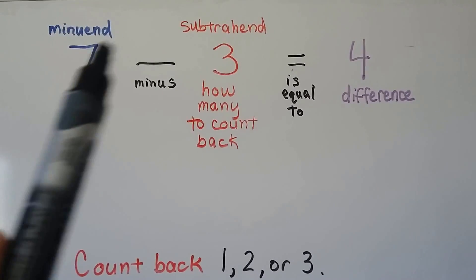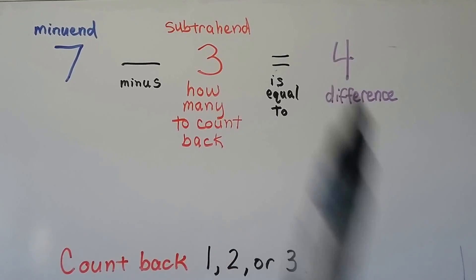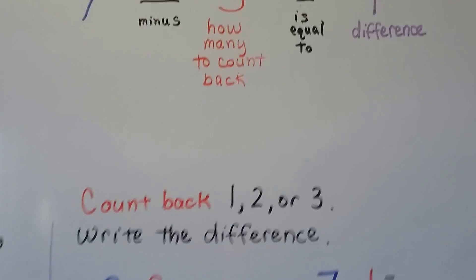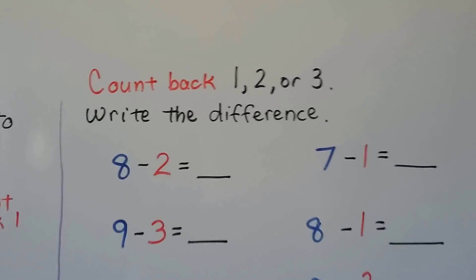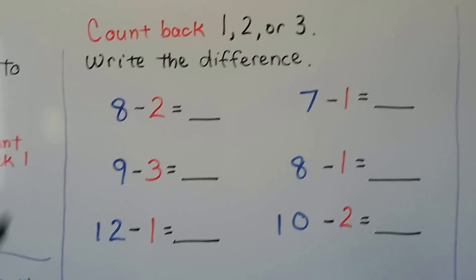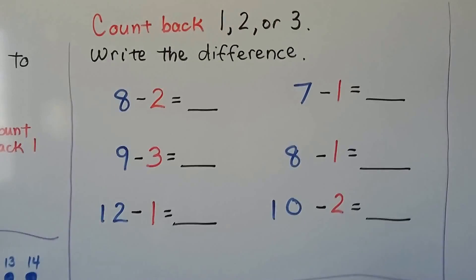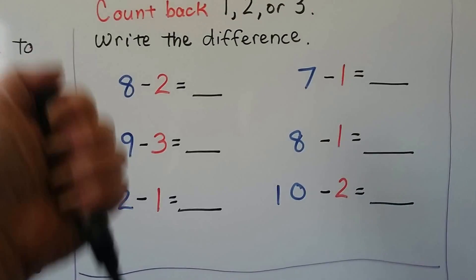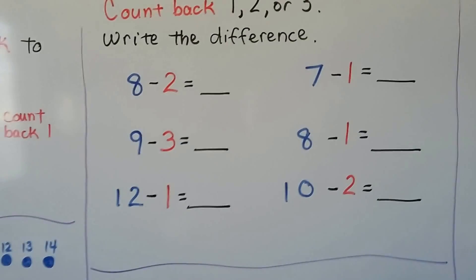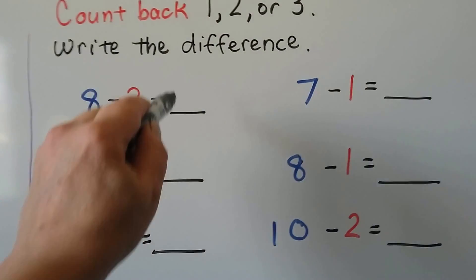The difference is the number that is the difference between these two numbers. What's the difference between a 7 and a 3? 4. We can count back 1, 2, or 3. We have 8 minus 2. We start with 8: 7, 6. 8 minus 2 is equal to 6.